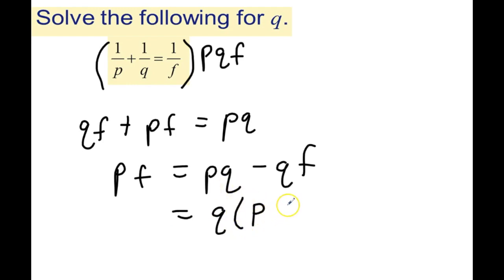So Q times parenthesis P minus F, and we still have PF on the left side. And now we can solve for Q by itself by dividing both sides by P minus F, and so we end up with P over F.